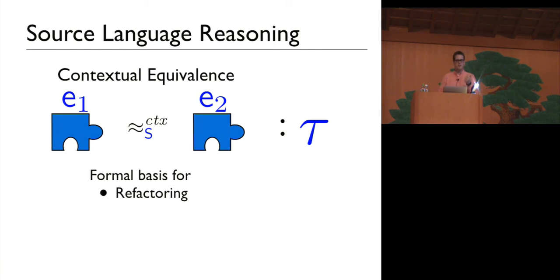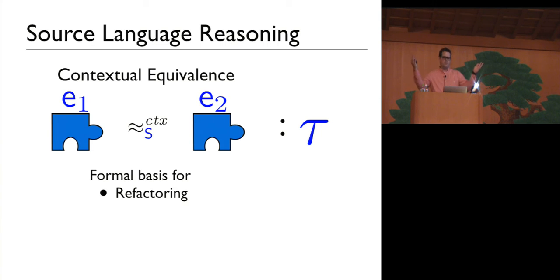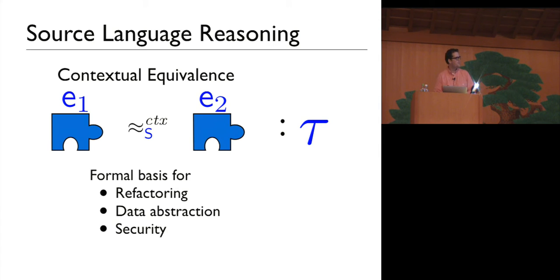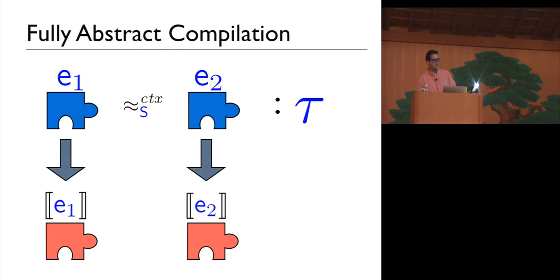E1 is indistinguishable from E2 by any program context of type tau. This is a key formal principle because it captures the kinds of refactorings that programmers do all the time — replacing one program fragment with another, knowing the whole program can't change. Specifically, it captures ideas like data abstraction: if I change the underlying representation of my abstract data type, I know I won't break client code. Or reasoning about security: if an object has a private field with a secret that's never exposed, it should be indistinguishable from another object with a different secret. Fully abstract compilation guarantees that all these reasoning principles are preserved by compilation.